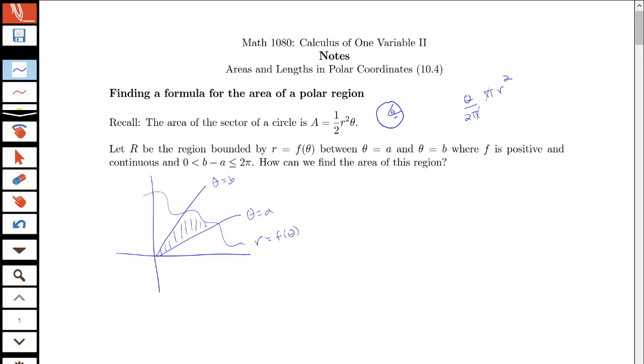So remember that when we tried to find the area under a curve y equals f of x between the curve and the x-axis, we looked at dividing up that region into lots of subintervals and then approximating the area on each subinterval by a rectangle. Here we're going to divide up this region into lots of subintervals, but we're going to approximate the area of each subinterval by the area of a sector of a circle.